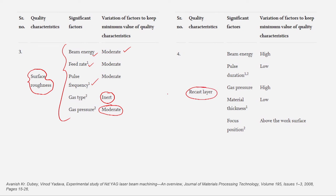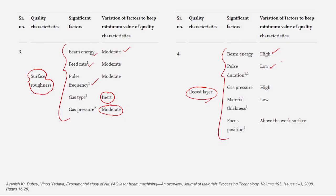To minimize the recast layer, high beam energy is preferred as it causes more vaporization than melting. Pulse duration should be low to generate high laser power density. Gas pressure should be very high to completely remove melted material. Material thickness should be low, since thicker material naturally produces more recast layer deposition.